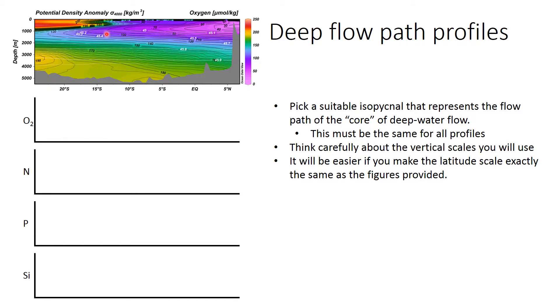The next part of the practical, which is the bulk of it, is to create profiles along the flow path of deep water. In the open ocean, flow paths are along lines of equal density, so water will be flowing in one direction or the other. Part of the practical is to work out which direction the water is going along one of these white lines. You need to figure out where the core of the deep water flow is.